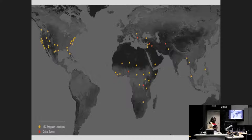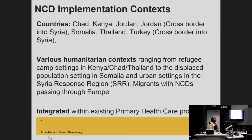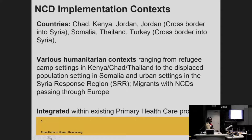Our work covers health, education, protection, safety-related work, economic recovery and development, as well as governance and rights-related work. In terms of NCDs, the contexts we work in currently range from refugee settings in Kenya, Chad and Thailand, to displaced population settings in Somalia and urban settings in the Syria response region. Our teams in Europe are also seeing migrants passing through with NCDs. A lot of the work we do is integrated within primary health care programs.